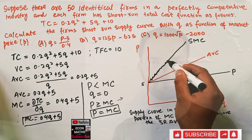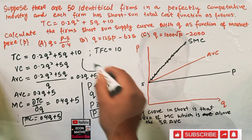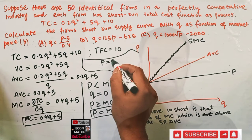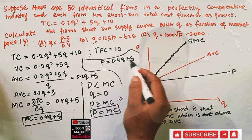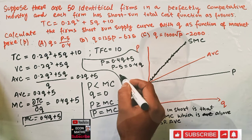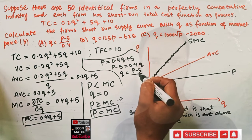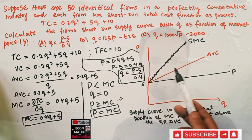This line is the short-run supply curve for a firm. At that point we write price equals marginal cost. If P = MC, then P = 0.4Q + 5. Solving for Q as a function of P: P - 5 = 0.4Q, which gives Q = (P - 5) / 0.4. This is the short-run supply curve for a firm.